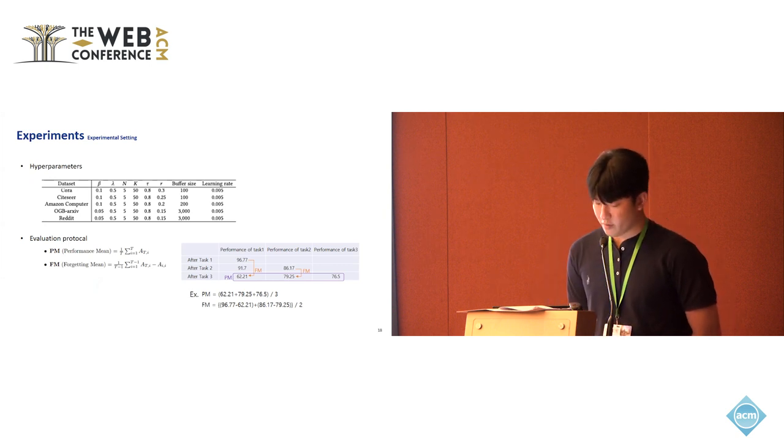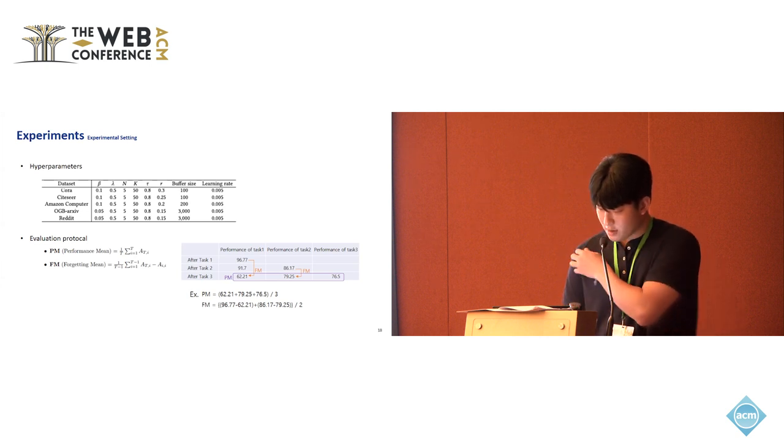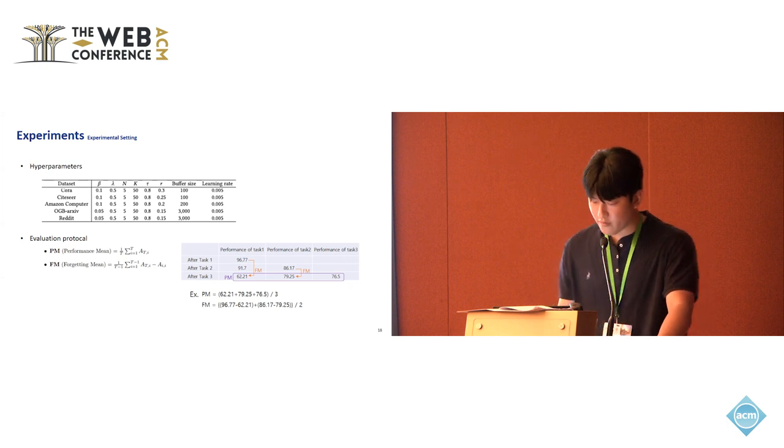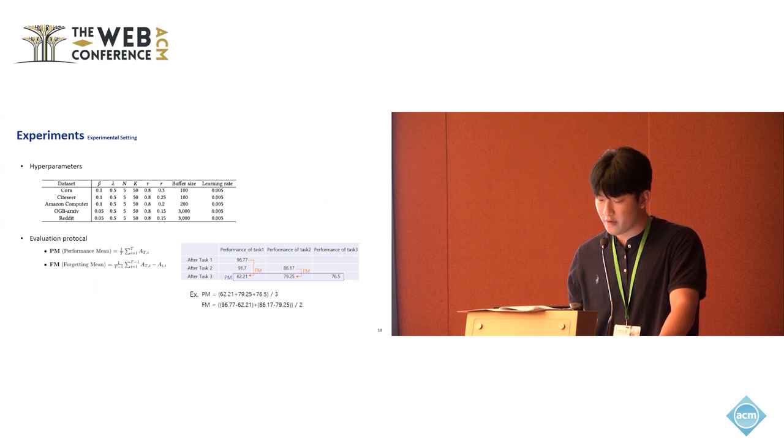Hyperparameters and evaluation protocol are as follows. PM is the performance mean, which is the average performance on preceding tasks after completing learning up to the last task. In the example on the right side, the PM is calculated based on the average of 62.21, 79.25, and 76.5, which is the performance of each task after training task three. And FM is the forgetting mean, which signifies the average decline in performance compared to when each task is initially trained. So the forgetting for task one is 96.77 minus 62.21, and the forgetting for task two is calculated by 86.17 minus 79.25.